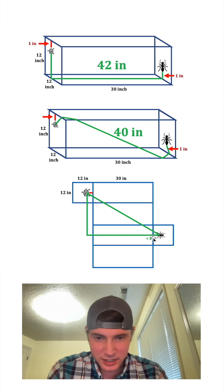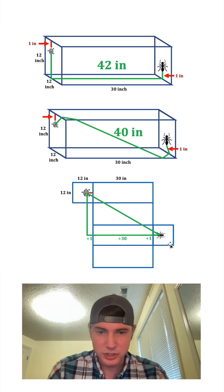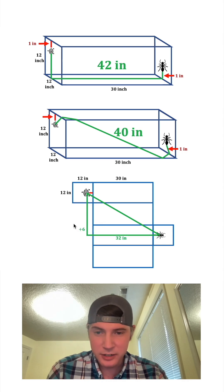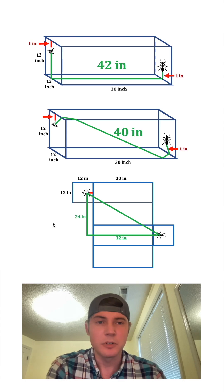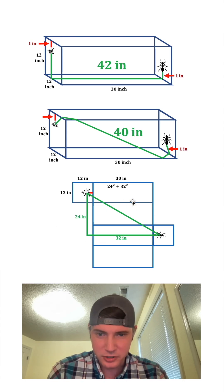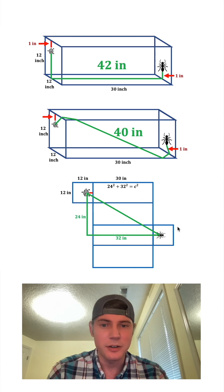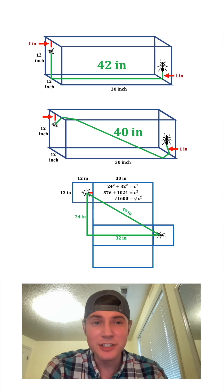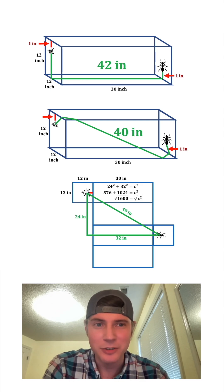So the ant has to travel 1 to get here, plus 30 across all this, plus 1, which makes this whole side length 32. And then once the ant is here, to travel up here would be half of the 12 — so it'll be 6, then a whole 12, plus another half 12, and this all adds up to 24. And now we can do Pythagorean theorem: 24 squared plus 32 squared equals C squared. That gives us these numbers, which then gives us 1,600 equals C squared. After we square root both sides, we get 40 for C, the last side length. And 40 inches is the shortest distance the ant can travel to get to the honey.